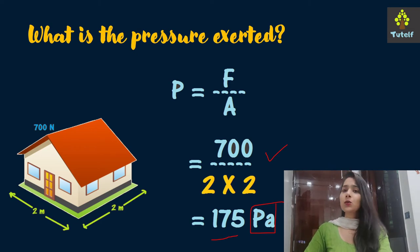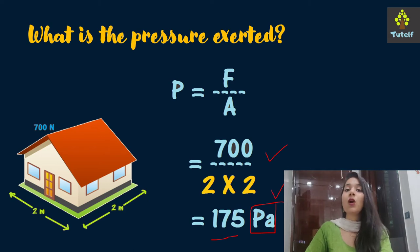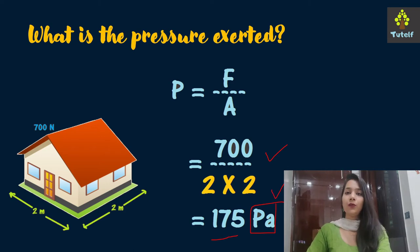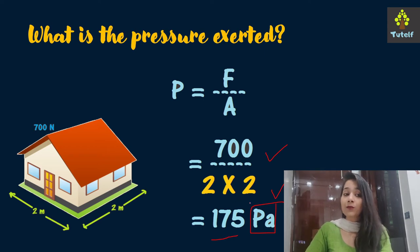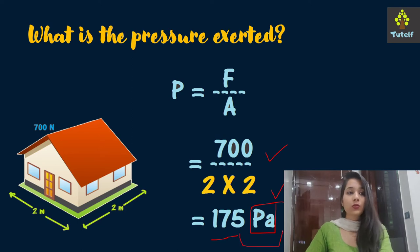The answer is 175 pascal, or equivalently 175 newton per meter square — both are acceptable. Please never forget to write the units, because when writing the magnitude you must always include units; they are very important.